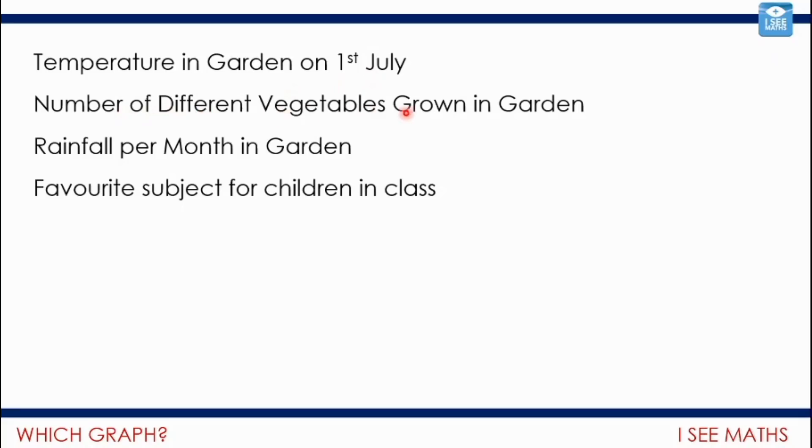Have a look at these examples here. We've got temperature in a garden on the 1st of July, the number of different vegetables grown in a garden, rainfall per month in a garden, and favourite subject for children in a class. I want you to look at those examples and think which kind of graph would you display this information in and why? Pause the video, have a think about that.